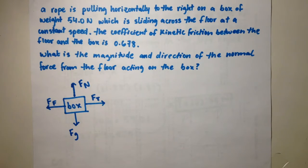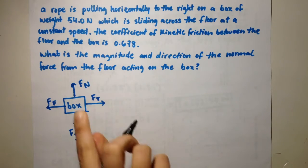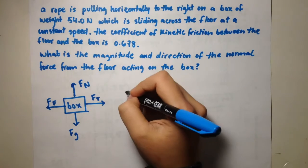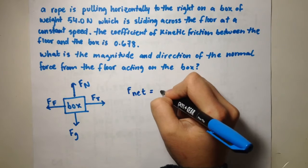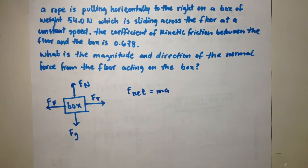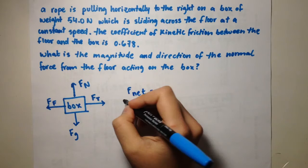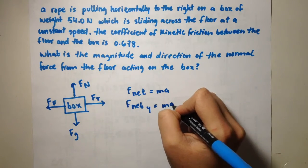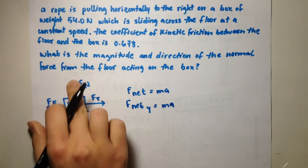Now let's look back at the question: what is the magnitude and direction of the normal force from the floor acting on the box? We already know the direction — it's up. To find the magnitude, we can use F net equals M times A. F net is the sum of all forces acting on the box in a specific direction, so let's use F net in the Y direction.